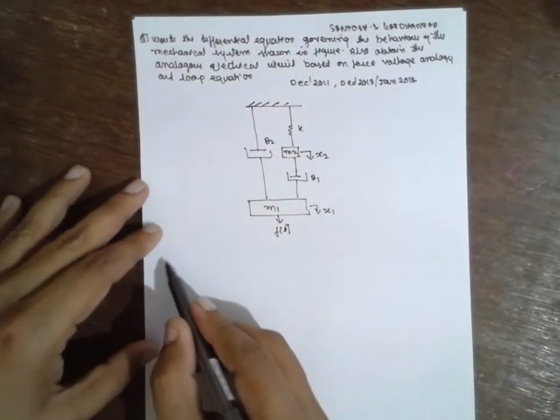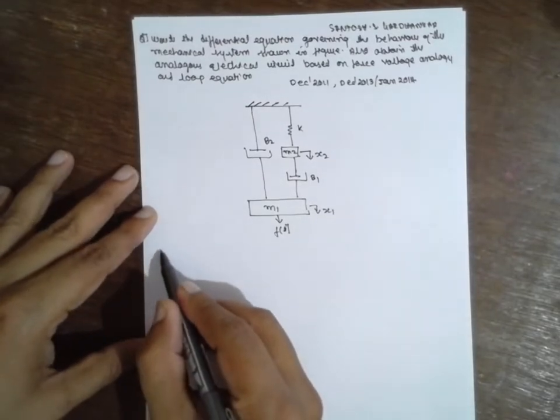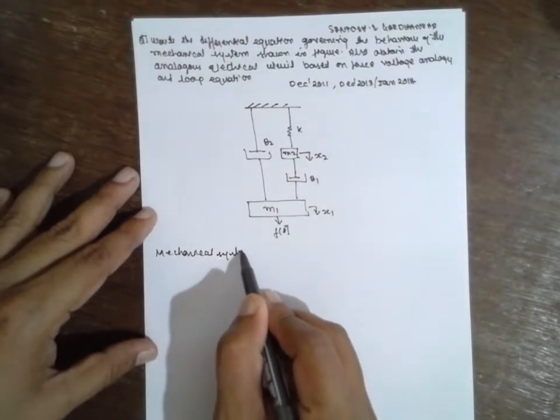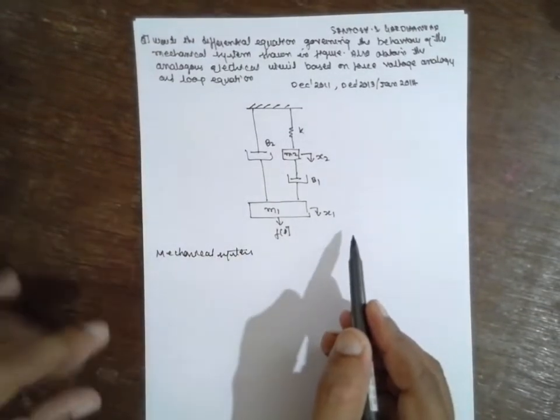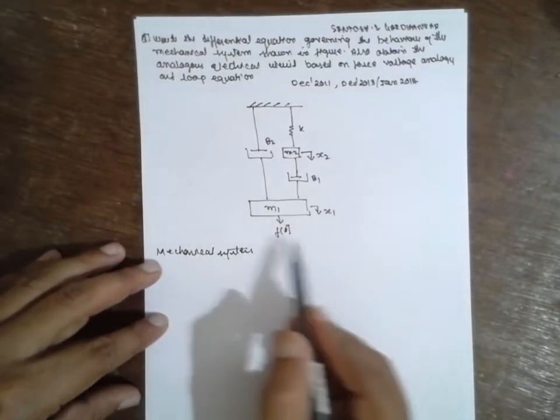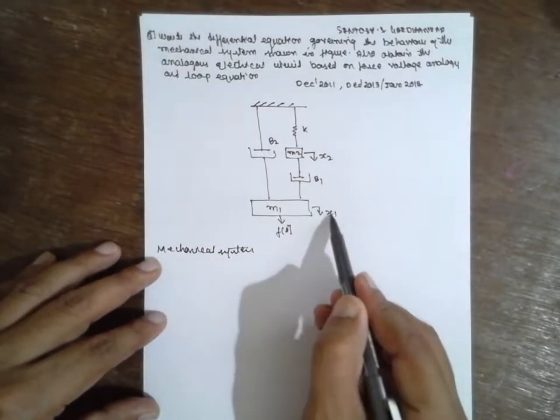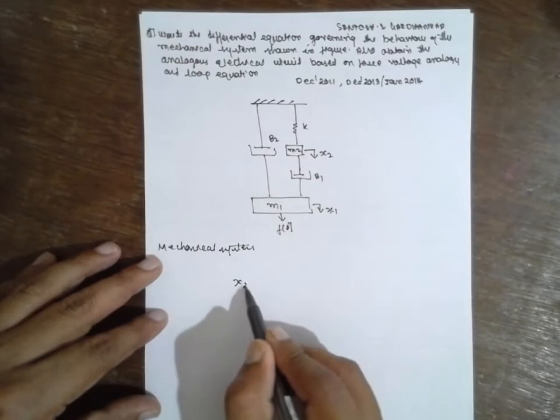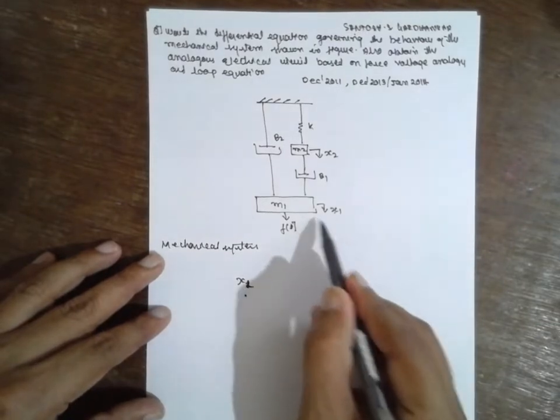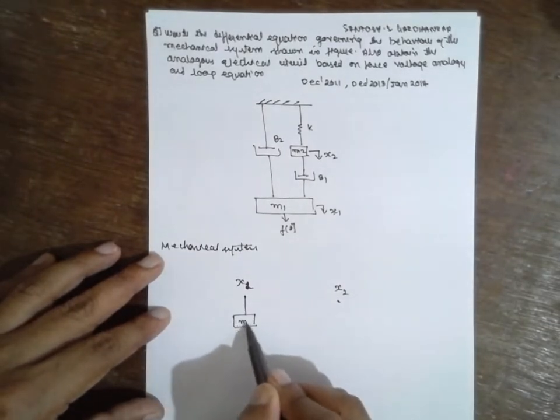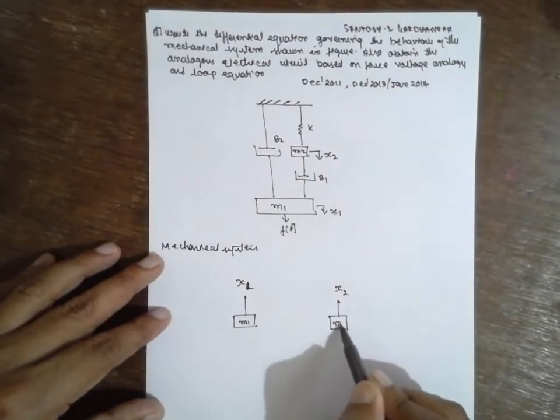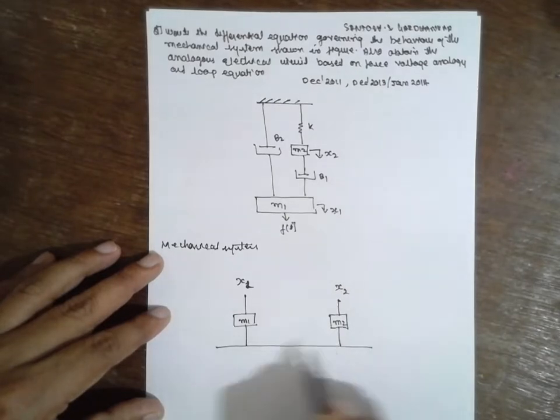We have to find out the equivalent mechanical system. I am drawing the equivalent mechanical system. First I will consider the node X1 and X2. These are the nodes. Node 1 is connected to the mass M1, node 2 is connected to the mass M2. These are connected to the ground. We have to connect everything to the ground.